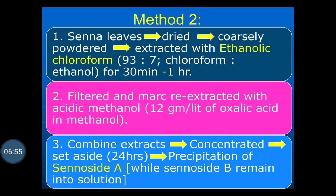The separated marc is again re-extracted with acidic methanol — that is, 12 grams per liter of oxalic acid in methanol. Both extracts — the ethanolic chloroform extract and the acidic methanol extract — are combined and concentrated, then set aside for 24 hours, during which precipitation of the sennosides will occur.